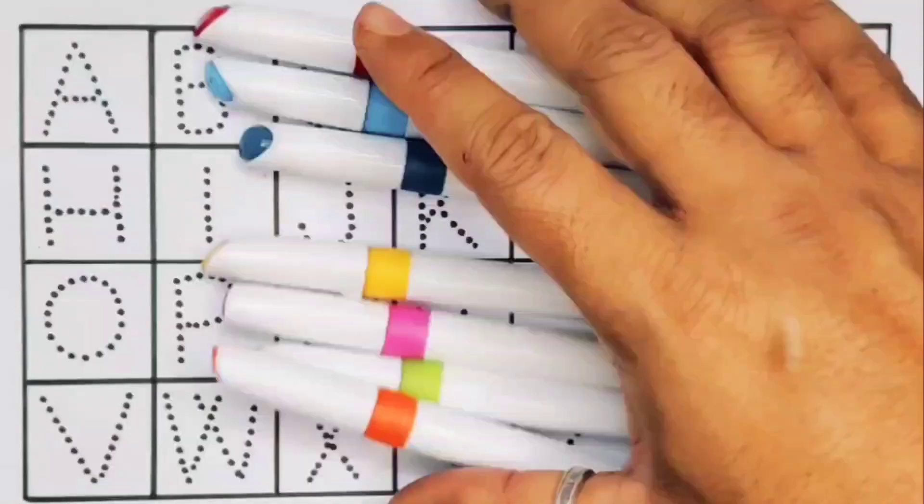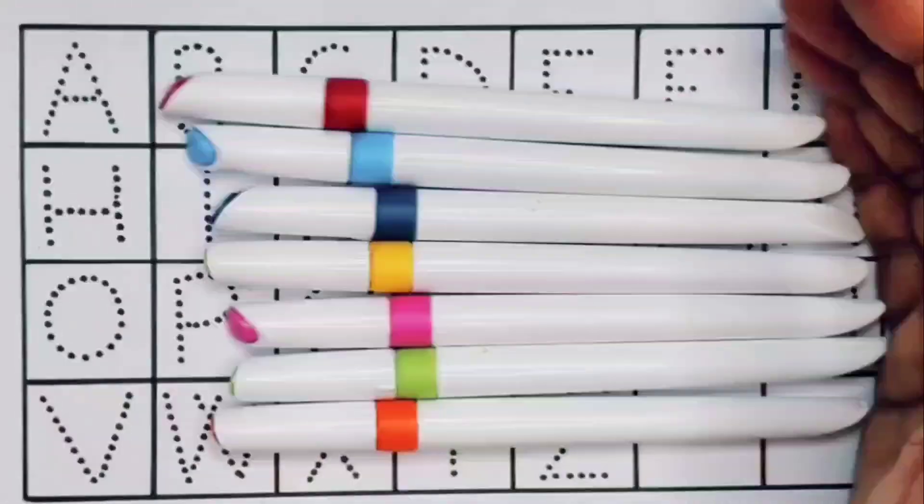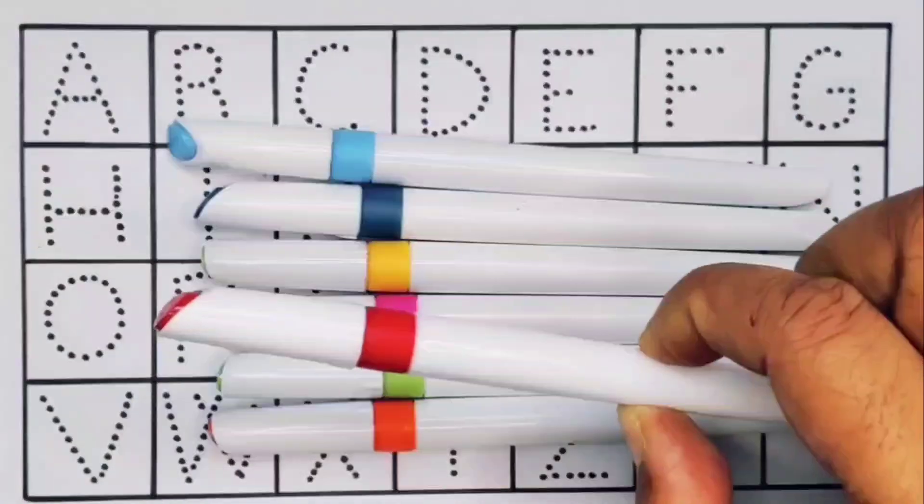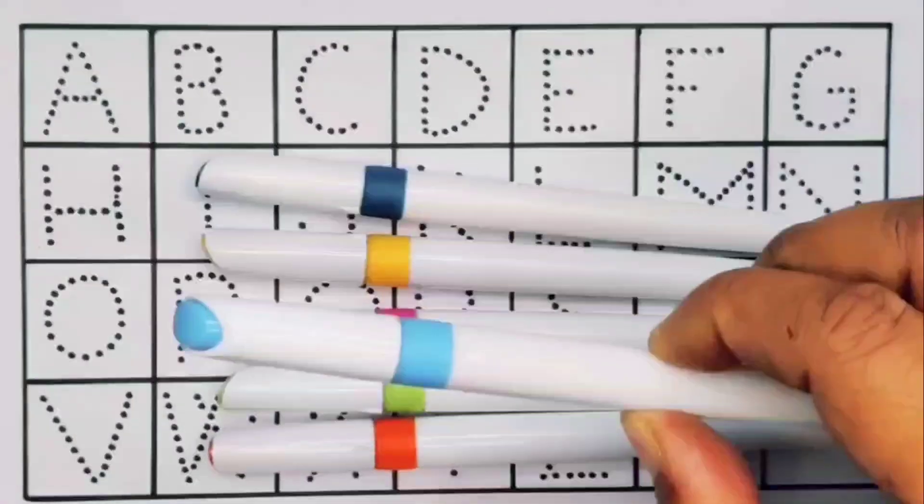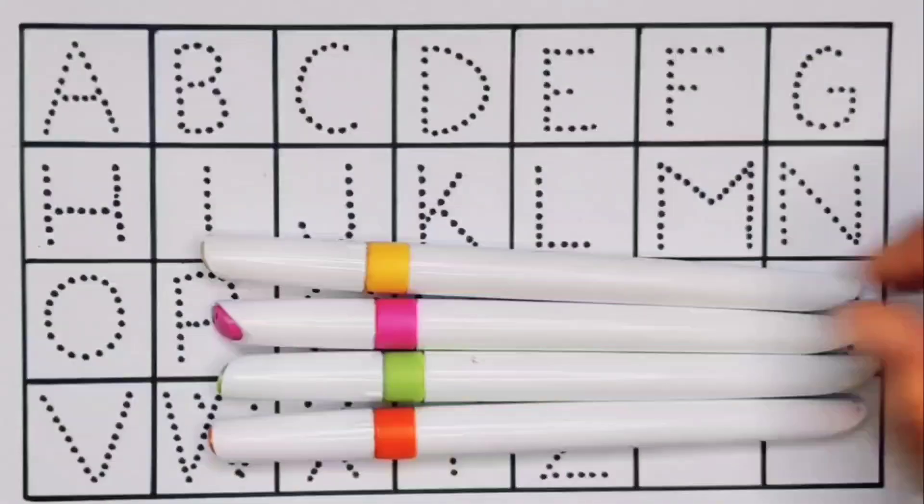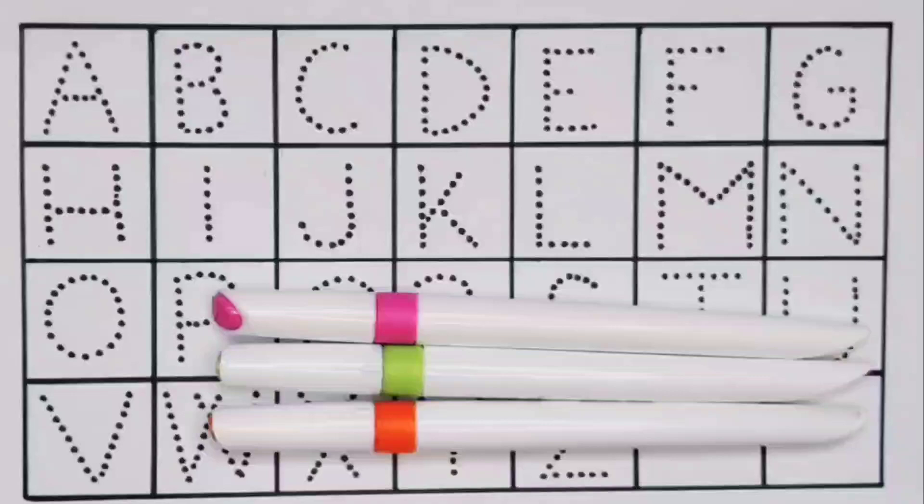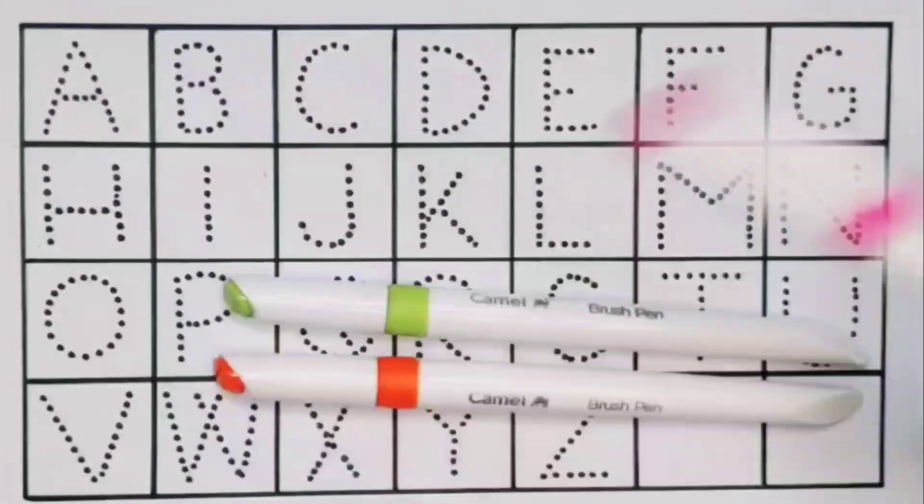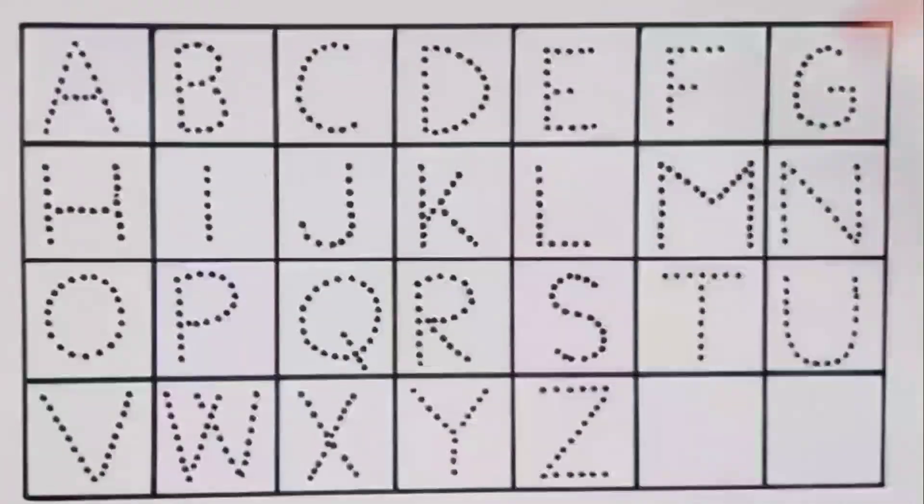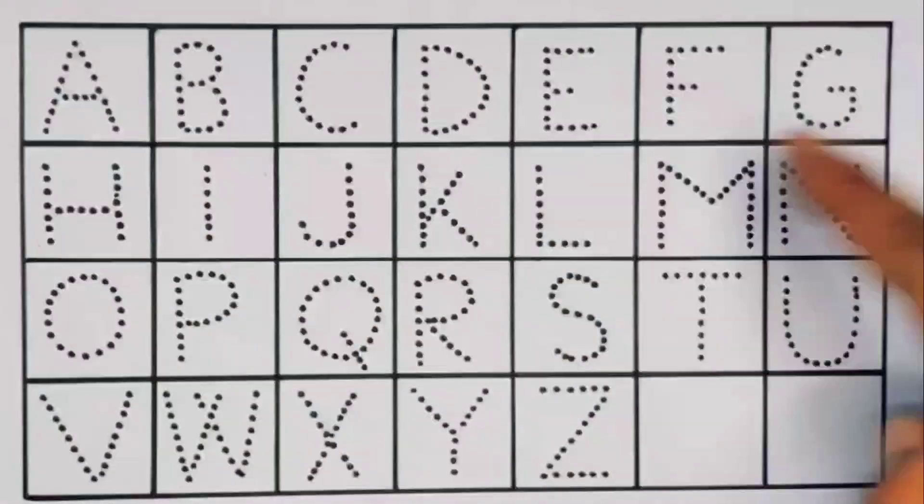Hello kids, welcome to my new video. First we're going to know the colors: red color, sky blue color, sweet green color, yellow color, pink color, light green color, and orange color. Now let's learn the alphabet A to Z.